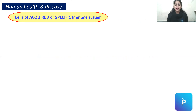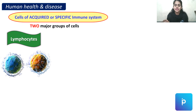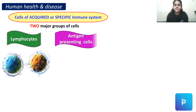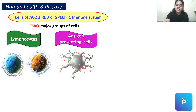Cells of acquired or specific immune systems are of two major groups. The first one is called lymphocytes and the second one is called antigen presenting cells. So there are two major groups of immune system cells: lymphocytes and antigen presenting cells. First we are going to talk about lymphocytes in detail.